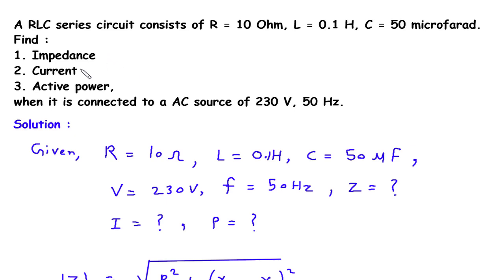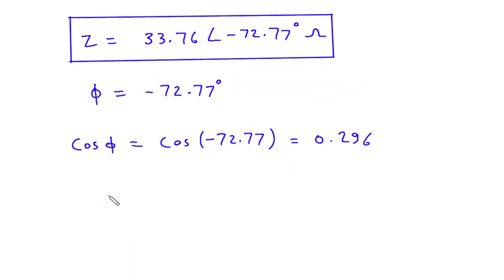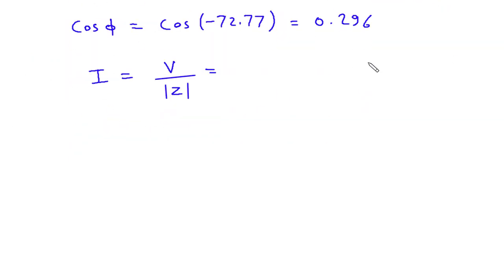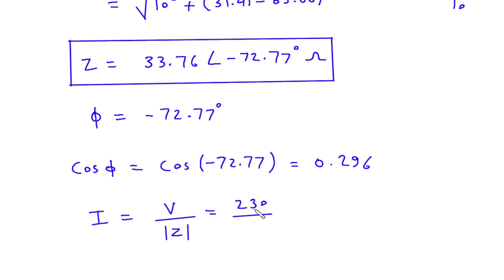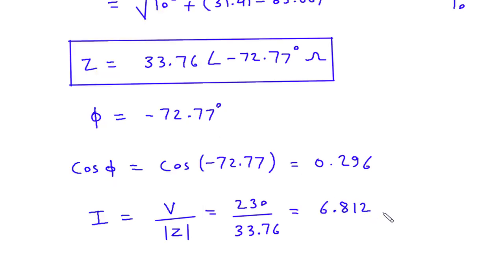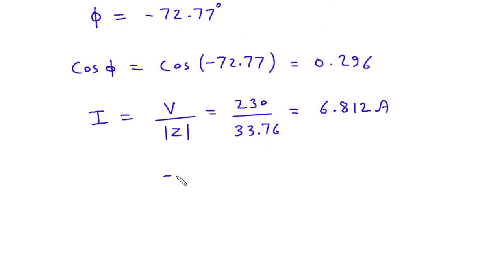Next, we have to find current. Current I equals V upon magnitude of Z. Voltage value is 230 volt, and magnitude of Z is 33.76. So this will be 230 divided by 33.76, which gives I equal to 6.812 ampere.